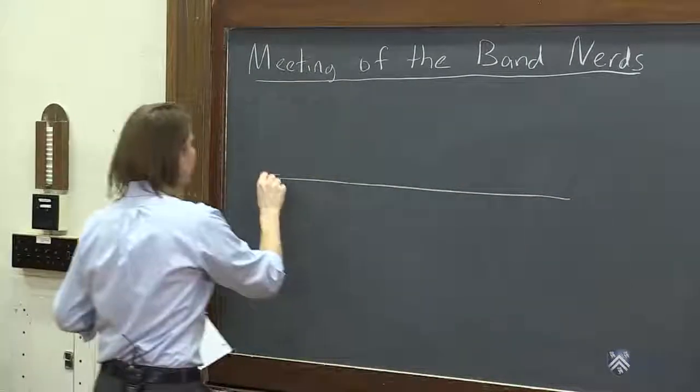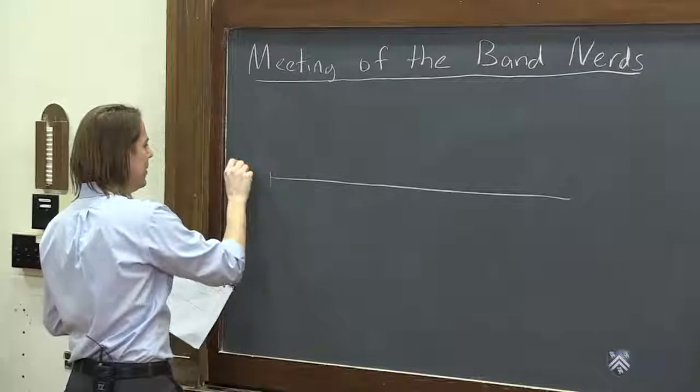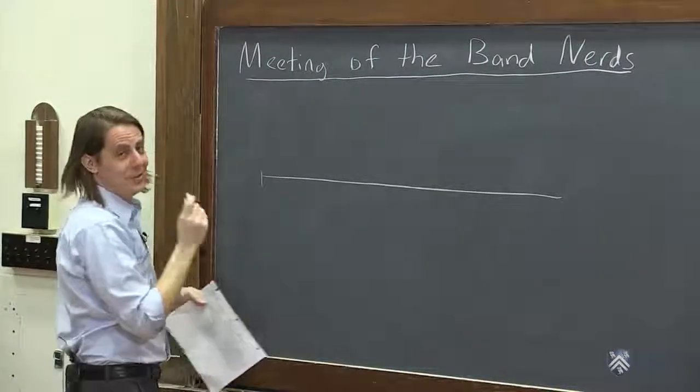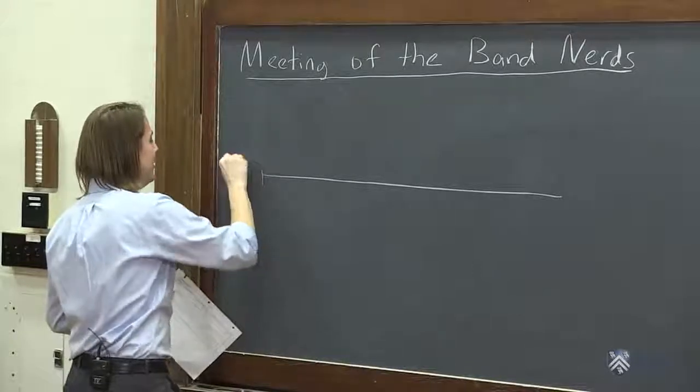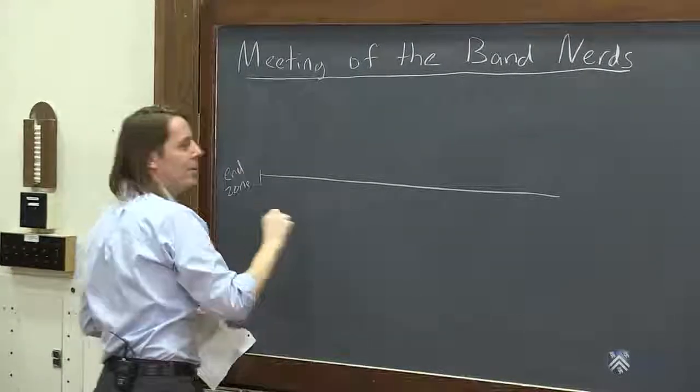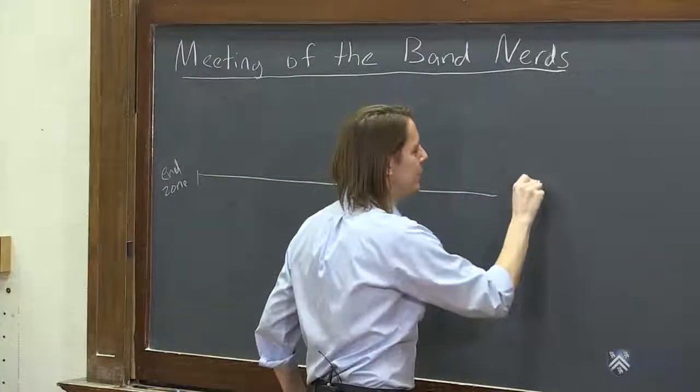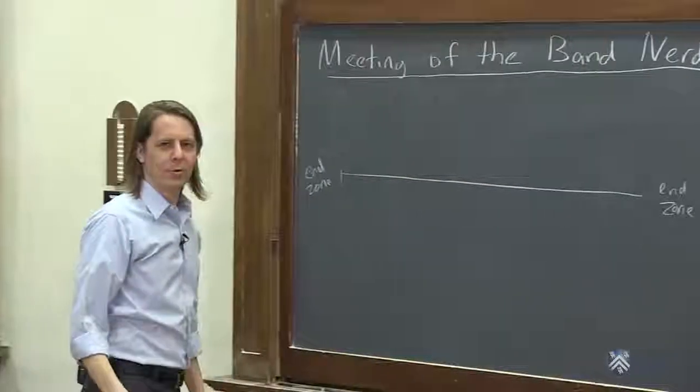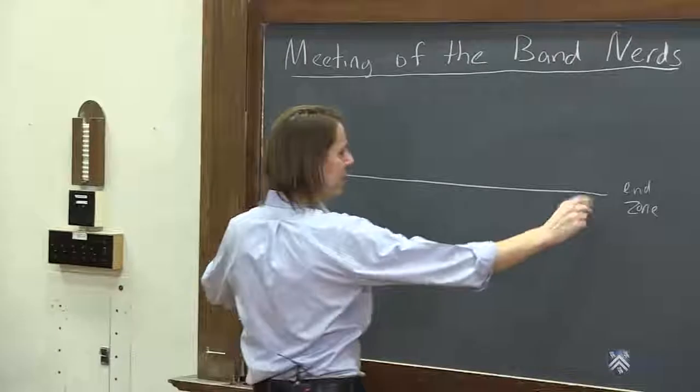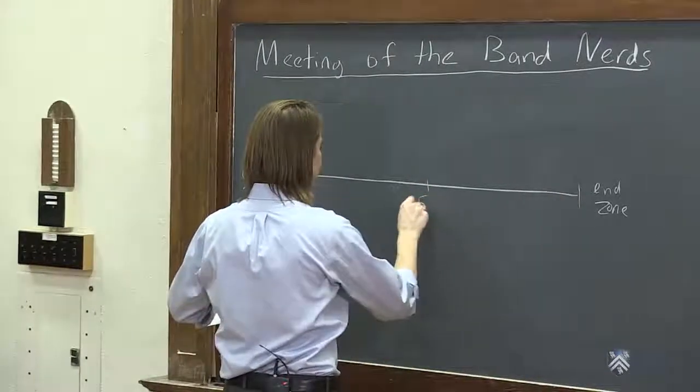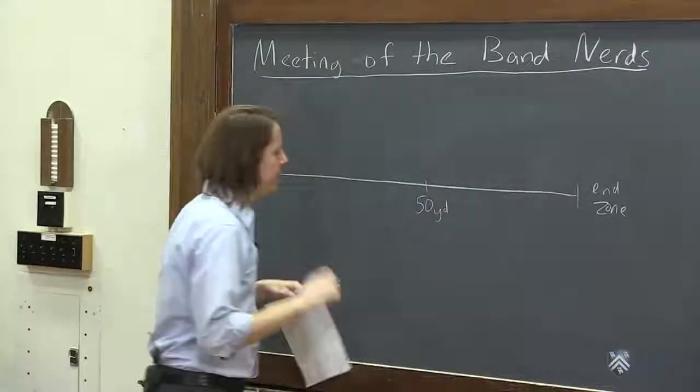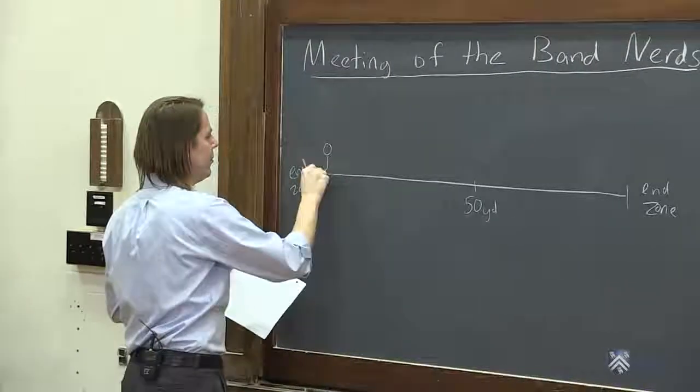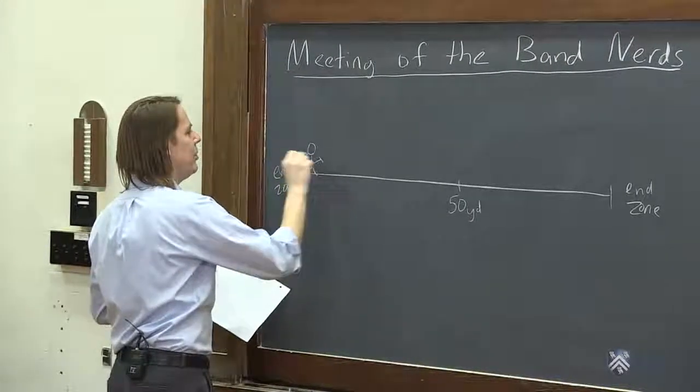So to do the meeting of the band nerds problem, you also have to understand American football. Okay, so this is the end zone. I have a deep understanding of American football. The end zone is over here, and the end zone is over here. And you know that the football field is 100 yards along, and in the middle is the 50-yard line. And we're going to imagine we've got a marcher over here, a band nerd over here, and this one is just playing a piccolo.